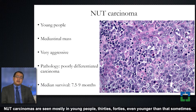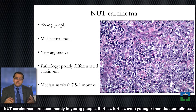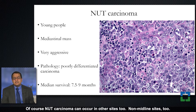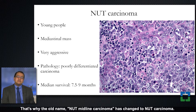NUT carcinomas are seen mostly in young people — 30s, 40s, even younger sometimes. They frequently form mediastinal masses, though NUT carcinoma can occur in other non-midline sites too. That's why the old name, NUT midline carcinoma, has changed to NUT carcinoma.